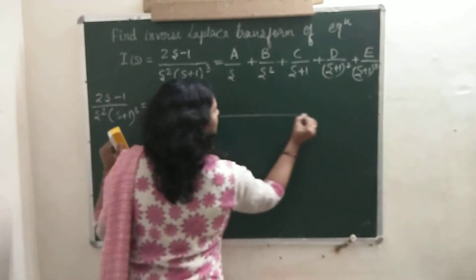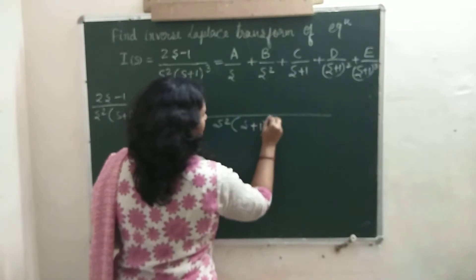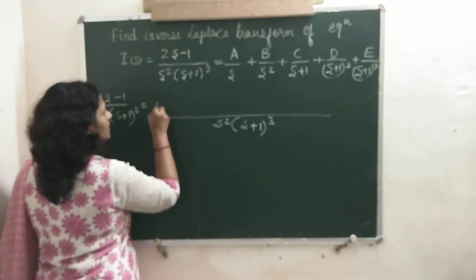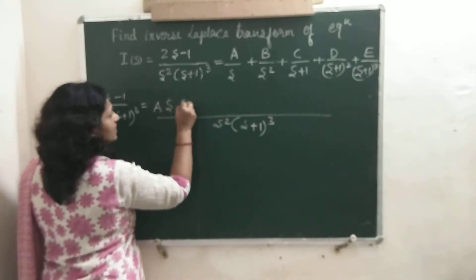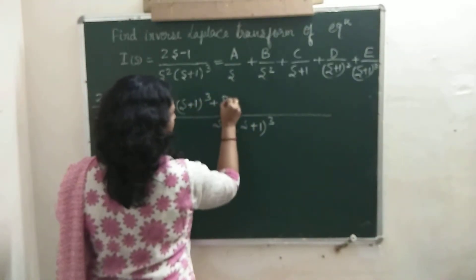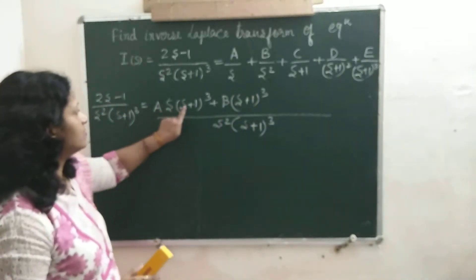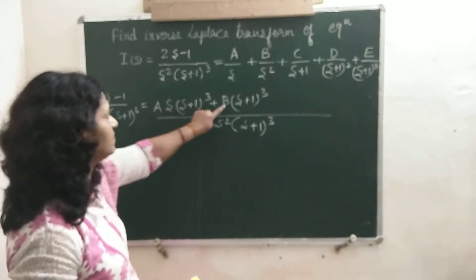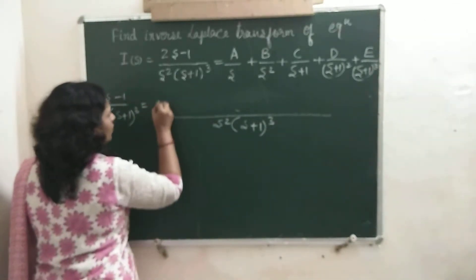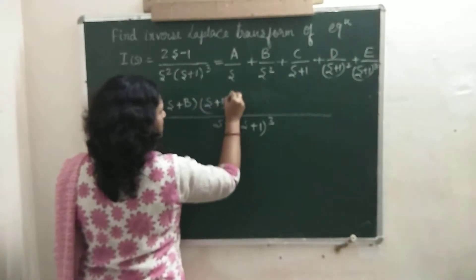On the right hand side, take the LCM. Dividing by S, there will come A times S times (S plus 1) whole cube, and dividing by S squared, there will come B times (S plus 1) whole cube. I can write (S plus 1) whole cube as common, with (AS plus B) in the bracket. So this is the simplified form: (AS plus B) times (S plus 1) whole cube.